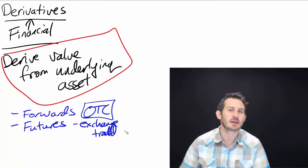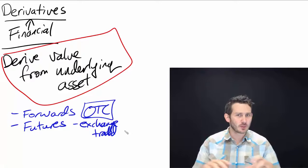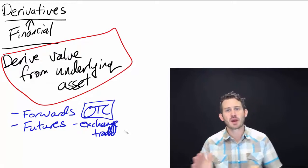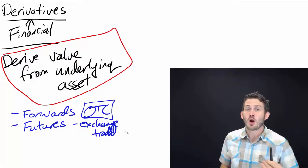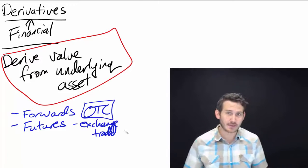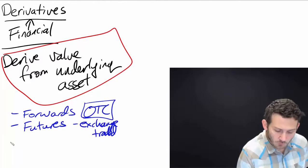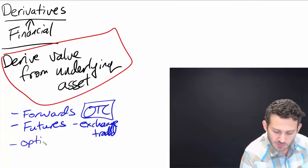They accomplish the same objective. Just a forward has a little more flexibility because it's just a transaction made between me and you or broker A, broker B, et cetera. The other ones we're going to have are going to be options.